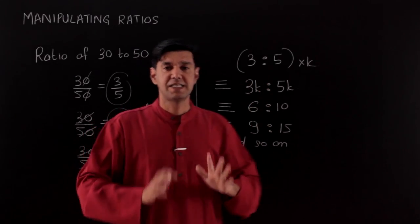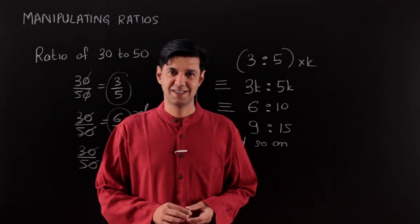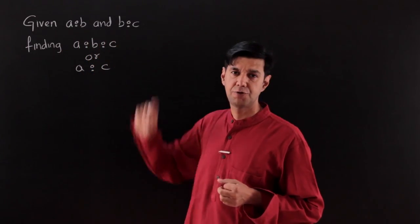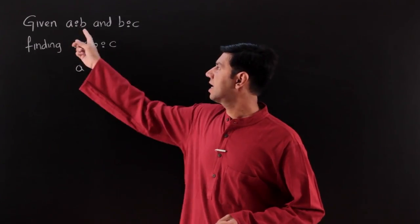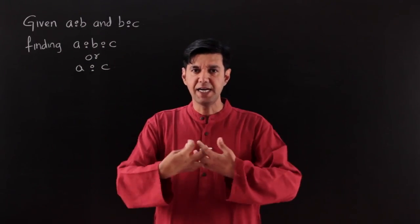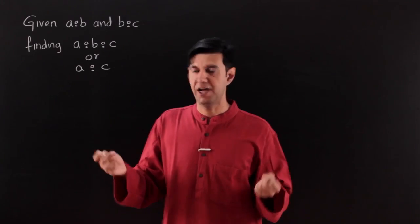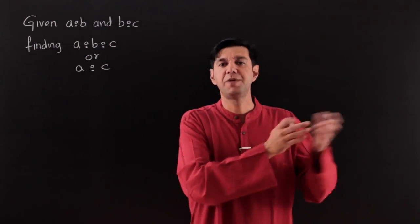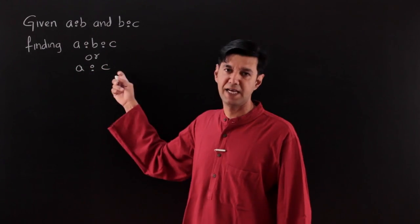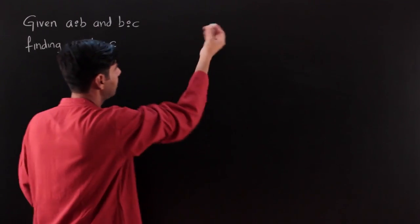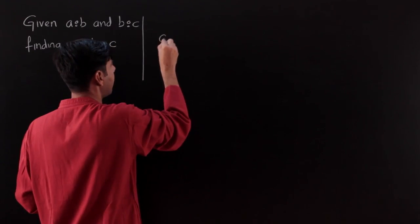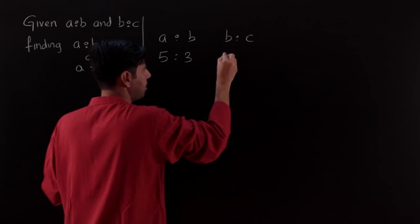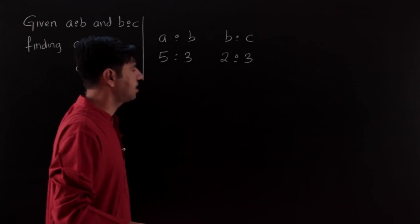Let's use this in a particular type of question: given a ratio A is to B and B is to C, what can we deduce? A and B are tied in a relation, and B and C are also related. Since B is common to both, we can find the relation between A and C, or in general between all three. For example, A is to B is 5 is to 3, and B is to C is 2 is to 3 — find the relation between A, B, and C.